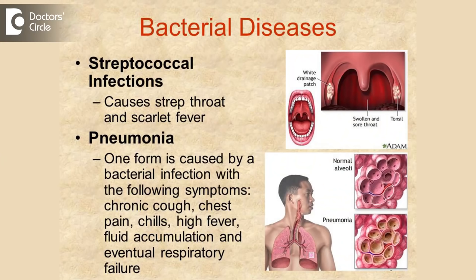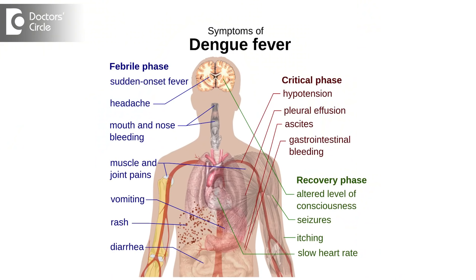The third cause is bacterial. In the viral category, the most common are measles, rubella, chicken pox, and dengue. Dengue fever rash appears almost when the patient is recovering. All the other rashes appear a little earlier.